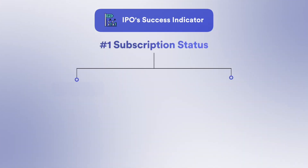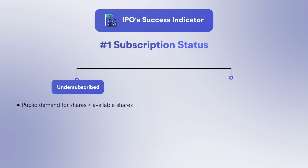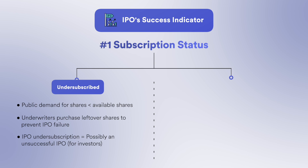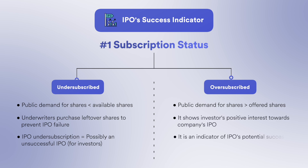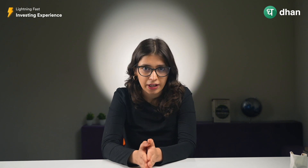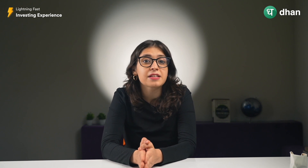As an investor, there are two key indicators to watch in an IPO. The first is subscription. When public demand is less than the available shares, the IPO is said to be under-subscribed. In this case, underwriters buy the balance shares so the IPO does not fail. When investors apply for more shares than available, the IPO is over-subscribed, which shows investor interest and potential success. In the case of over-subscription, shares are allotted using pre-defined criteria such as a pro-rata basis or lottery system. In some cases, over-subscription allows the company to issue additional shares, which is called the green shoe option.